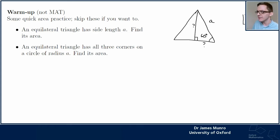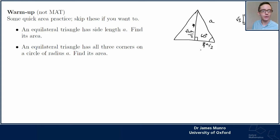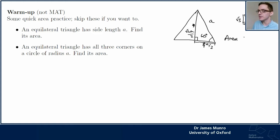There's a triangle I know about that has a 60-degree angle in it, with sides in ratio 1, √3, 2. Labeling the sides: this means this is a/2 over here, and this is √3·a/2 over here. So I've got the height of my triangle as √3/2 and my base as a - or rather this half-length here is a/2.